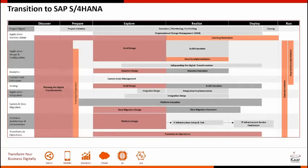In the Run phase — the post-go-live phase — you start optimizing the operability of S/4HANA. The new SAP system is continuously updated, making the latest innovations from SAP available to the business, and then this innovation cycle starts again. This gives you an overview of the various activities performed in each phase under each of the work streams.